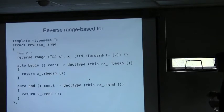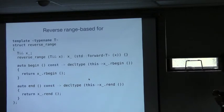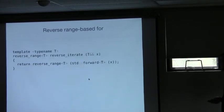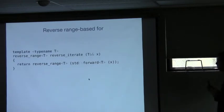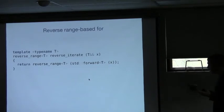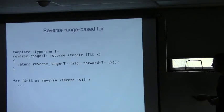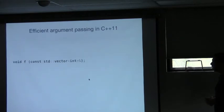Here's some interesting C++11 code — a little helper that will create a reverse iteration adapter for us. This is a recurring idiom: make_shared, make_unique, make_tuple, and this one creates our adapter. And that's how we can use it to reverse iterate over some container V.